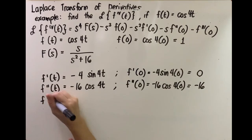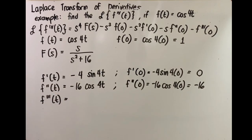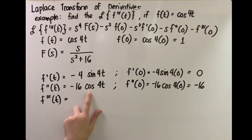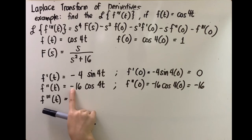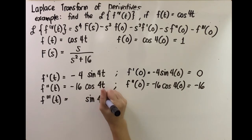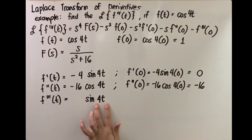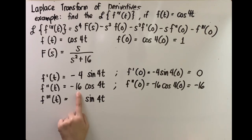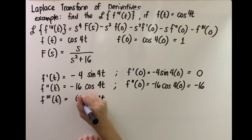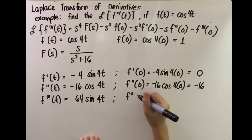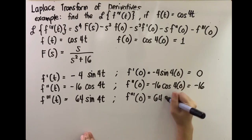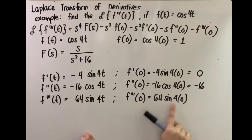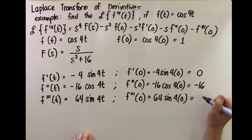We need f triple prime of t: take the derivative of negative 16 cosine 4t. The derivative of cosine is negative sine, so negative times negative gives positive, and 4 times 16 gives 64. So f triple prime of t equals 64 sine 4t. Then f triple prime of 0: substitute t with 0, giving 64 sine of 0. Since sine 0 is 0, f triple prime of 0 equals 0.